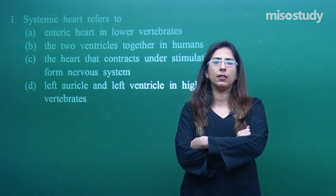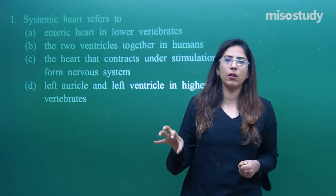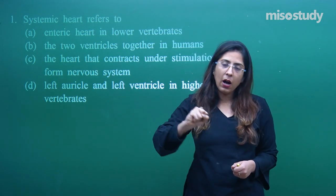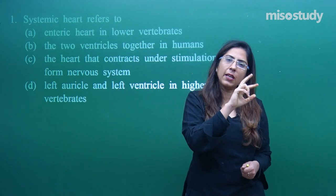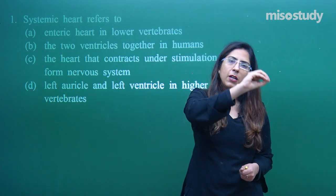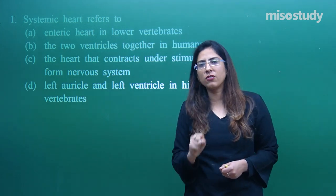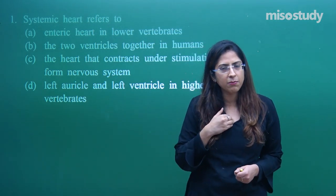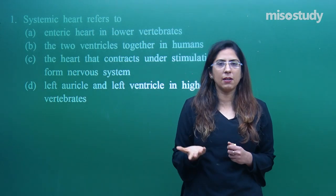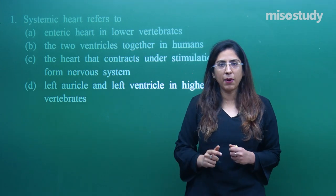In pulmonary circulation, the heart pumps deoxygenated blood to the lungs. In the lungs, exchange of gases occurs and deoxygenated blood becomes oxygenated blood. That oxygenated blood returns back to the heart, and the heart pumps it again to the various structures. In our case we have both pulmonary and systemic circulation, which is why we call it double circulation.